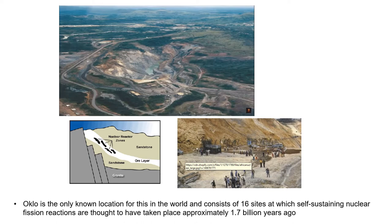Fission of uranium normally produces five known isotopes of the fission product gas xenon. All five have been found trapped in the remnants of the natural reactor in varying concentrations. The concentrations of xenon isotopes found trapped in mineral formations 2 billion years later make it possible to calculate the scientific time intervals of reactor operation — approximately 30 minutes of criticality followed by 2 hours and 30 minutes of cooling down to complete a three-hour cycle.